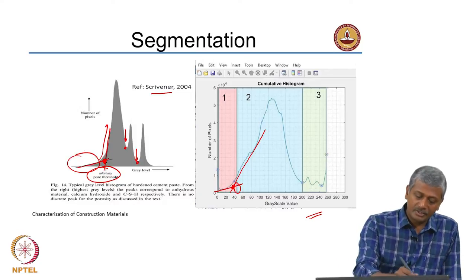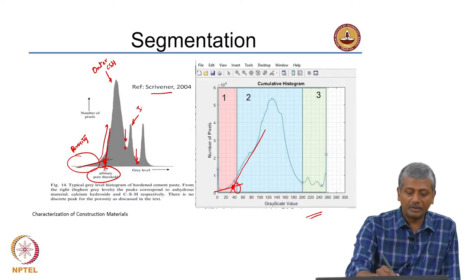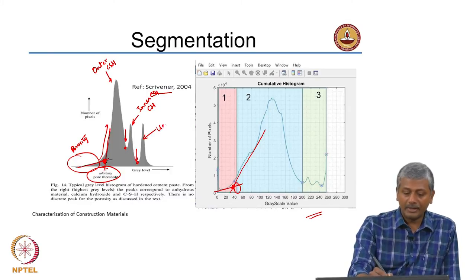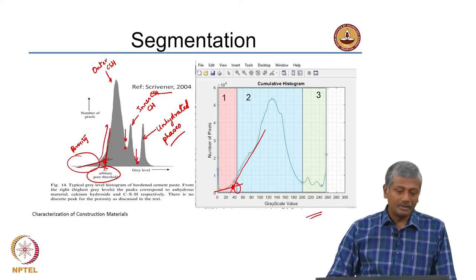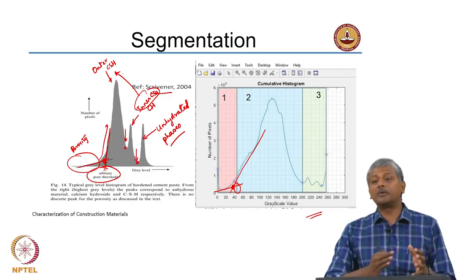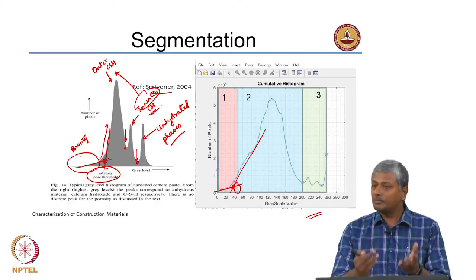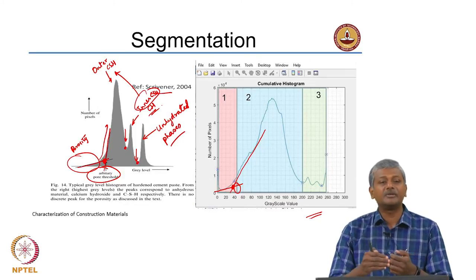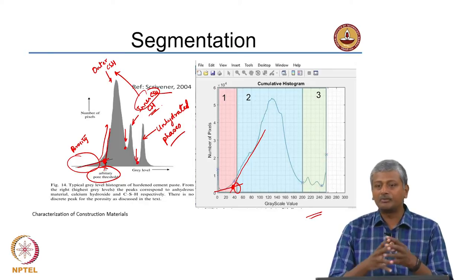What do you think these phases are? This region is porosity. This may be outer C-S-H. This could correspond to inner C-S-H or probably to calcium hydroxide, and that could be unhydrated phases. You will be lucky to get a histogram with such specific peaks for each phase. Usually your inner C-S-H and outer C-S-H will not be distinguished that clearly in terms of grey levels; calcium hydroxide may be, but not inner and outer C-S-H. Again, this depends on how well you have prepared your sample and how well you have set the imaging characteristics — brightness, contrast, focus, and stigmatism correction.